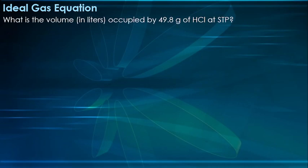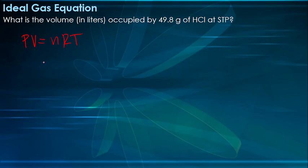Okay, so again we have a problem: what is the volume in liters occupied by 49.8 grams of hydrogen chloride at standard temperature and pressure? The ideal gas equation is pressure times volume equals the amount of gas times the gas constant times the temperature in Kelvin. Since volume is what we need to find, we need to derive our equation, so the formula we will use is volume equals number of moles times gas constant times temperature over pressure.